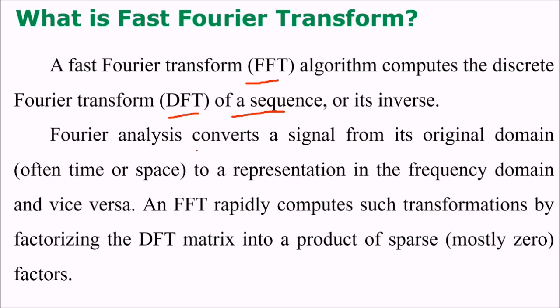Fourier analysis converts a signal from its original domain, which can be time or space (spatial domain), to a representation in the frequency domain and vice versa. FFT rapidly computes such transformations by factorizing the DFT matrix into a product of sparse matrices.